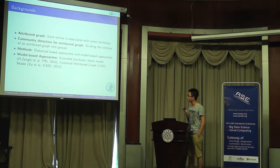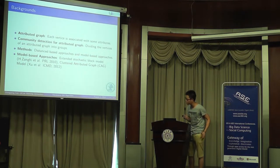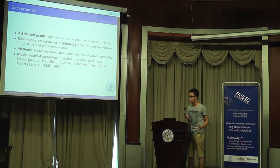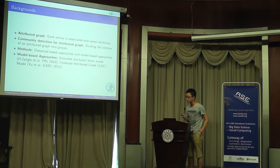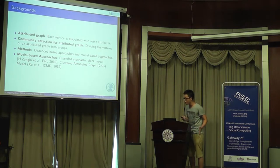After we introduce Community Detection for General Graphs, we introduce Community Detection for Attributed Graphs. Attributed Graphs is a graph where each vertex is associated with some attributes. The existing methods are divided into two classes: distance-based approaches and model-based approaches. In our paper, we only focus on the clustered attribute graph model, the CAG model.